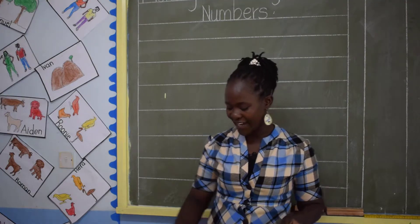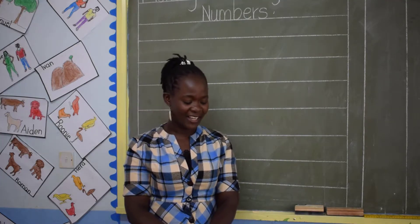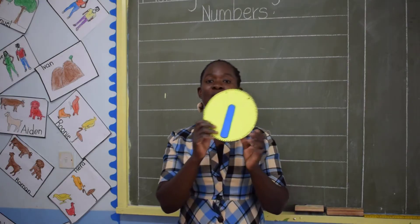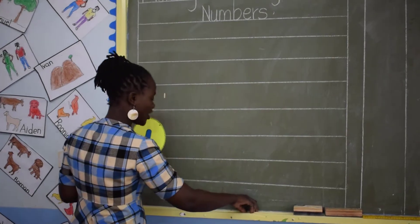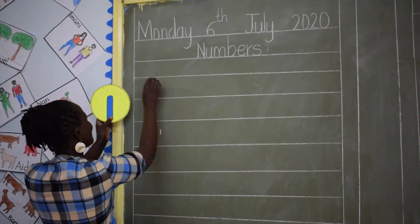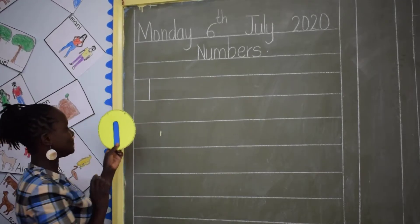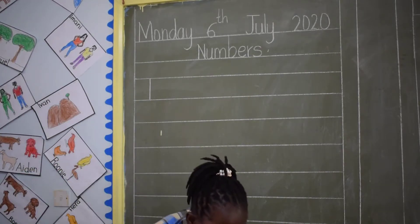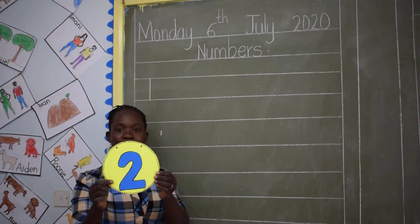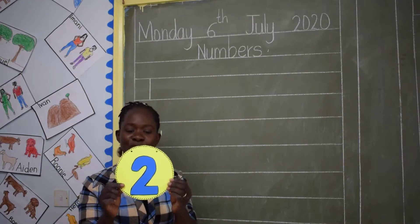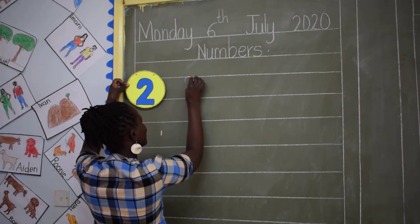And today we are going to write our numbers, children. Starting with number 1. This is number 1, so let's write number 1 — number 1 like a stick. Now we go to number 2. What number is this, children? This is number 2. Here is number 2.